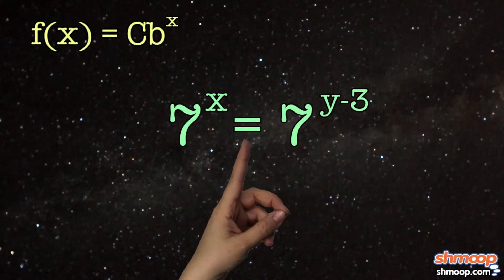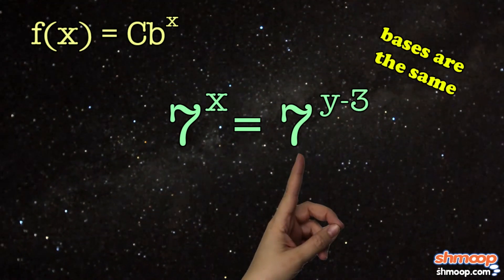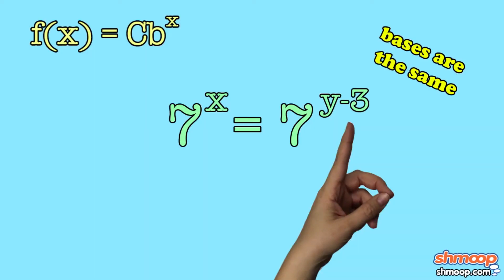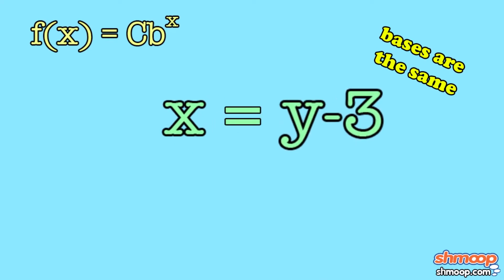If the two sides are equal, and the bases are the same, then the two exponents must be equal as well, meaning that x equals y minus 3. Boom. Done.